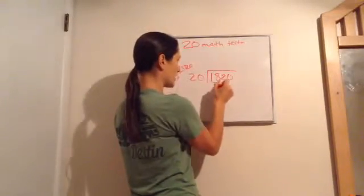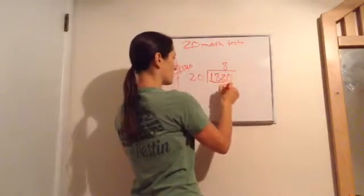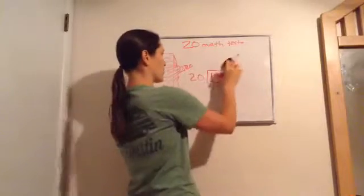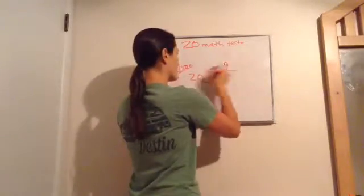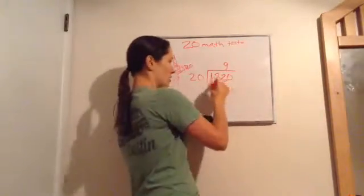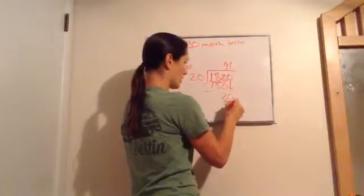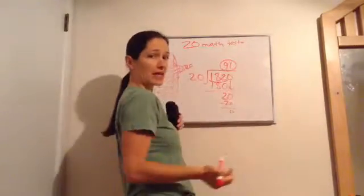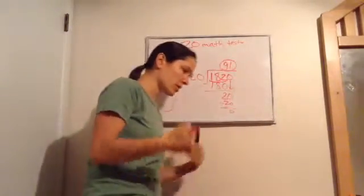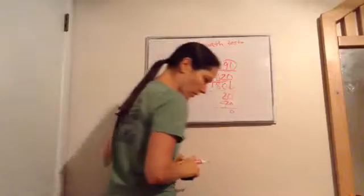Let's try 9: 9 times 0 is 0, 9 times 2 is 18 — that works without going over. Subtract, bring down the 0. 20 goes into 20 one time. So the average score is 91. After all those tests — hundreds, 95s, 90s, and 80s — the average score is 91, and that's what goes on your report card.